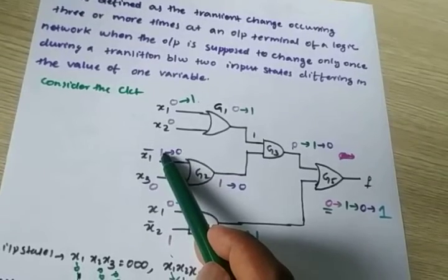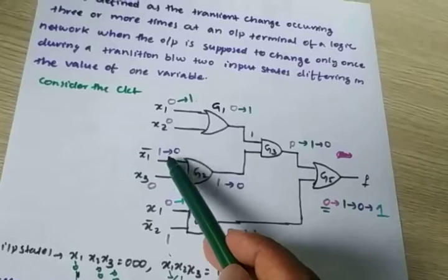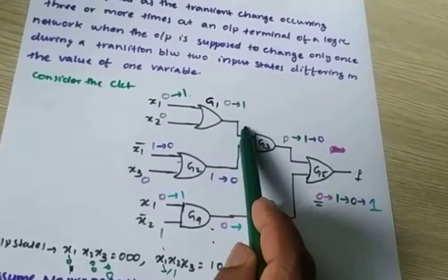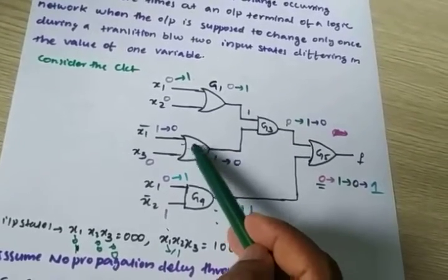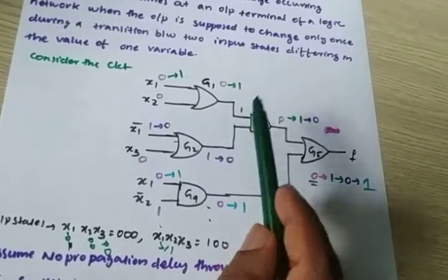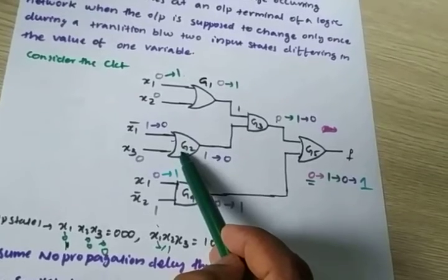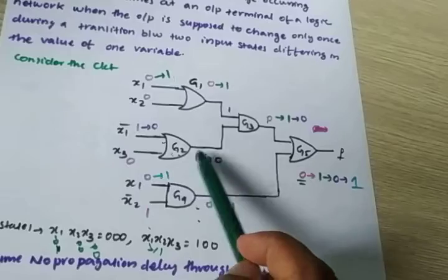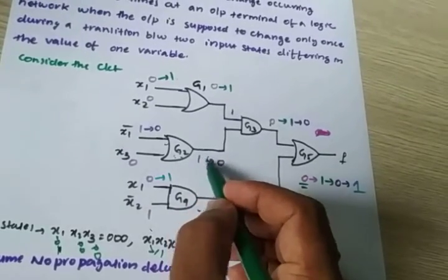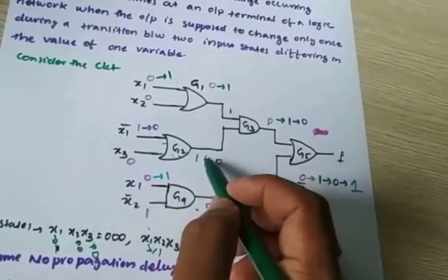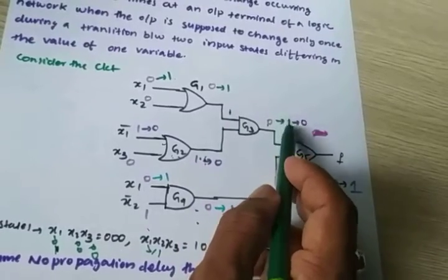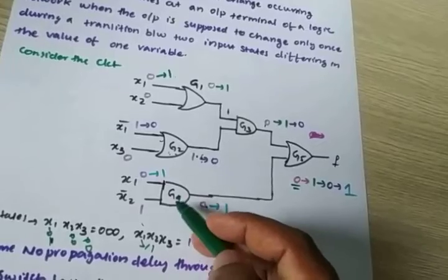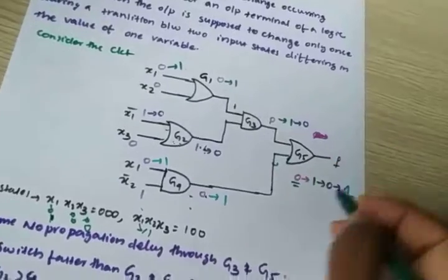Now this 1 should change to 0, but it won't change immediately because of propagation delay. G1 is very fast and produces output 1, but g2 is a bit slower so its transition hasn't reflected yet. Because of propagation delay, the zero at g2's output hasn't appeared, so 1 times 1 gives output 1. At the OR gate, 0 plus 1 gives 1.